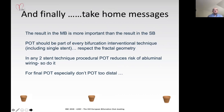The take-home messages: the result in the main branch is always going to be more important than the result in the side branch. POT should be part of every bifurcation interventional technique, including a single stent—it is the best way of respecting fractal geometry. In any two-stent technique, procedural POT reduces the risk of abluminal wiring. In a culotte there will be three POT procedures, making it safest; two in a DK crush. For final POT especially—don't pot too distally, as that will compromise the orifice of the side branch.